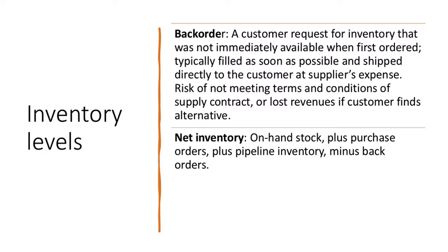The first level is backorder. Backorder inventory level is when you receive a request for inventory that was not immediately available — you receive the order but you are not able to fulfill the order at that time. If you receive a customer request for inventory that was not immediately available when first ordered, it will be filled as soon as possible and shipped directly to the customer at the supplier's expense, with risk of not meeting terms and conditions of the supply contract.